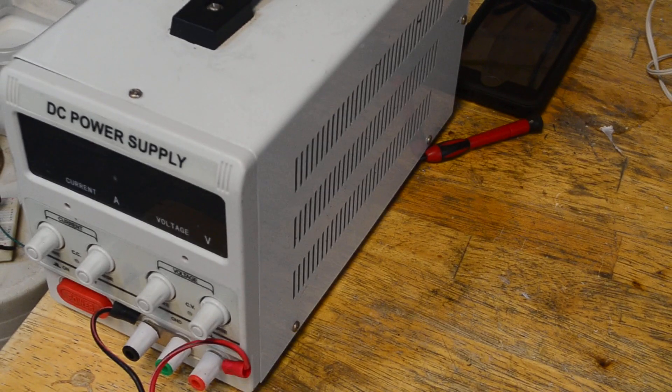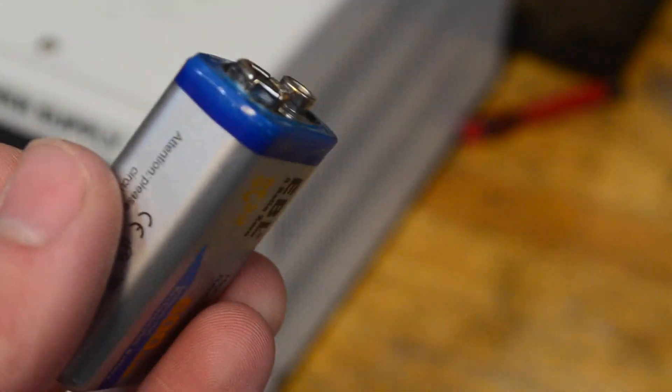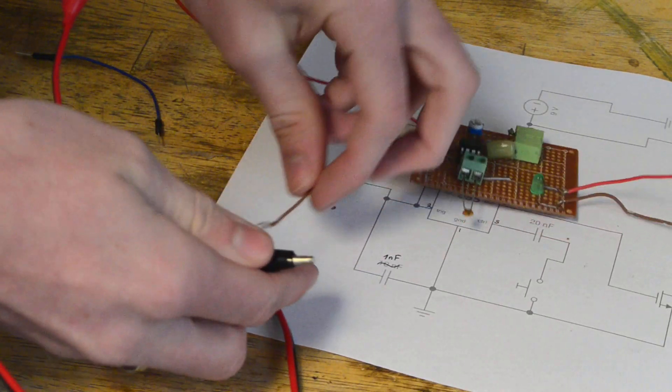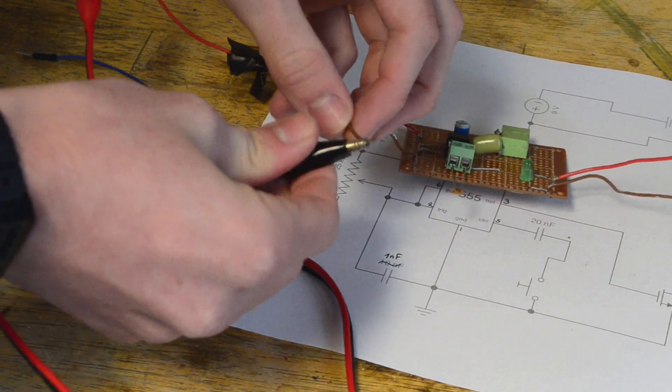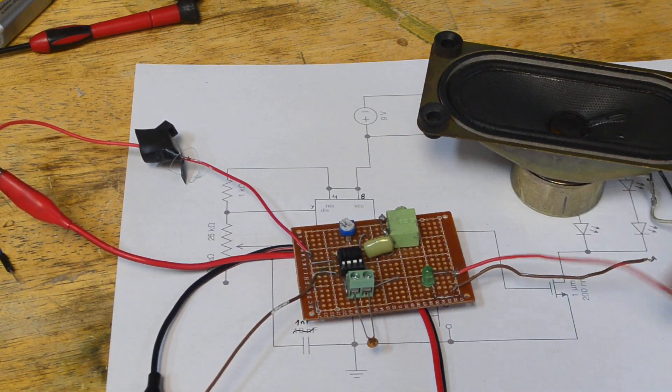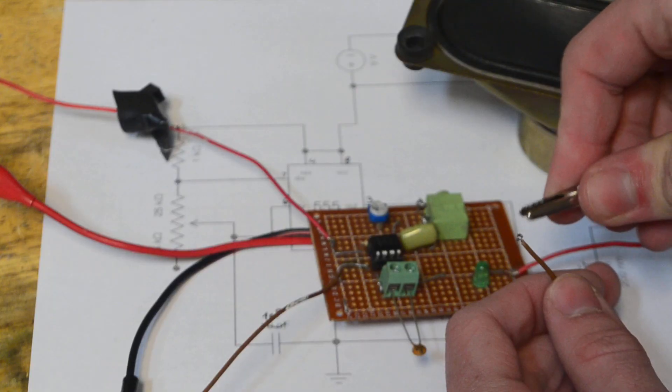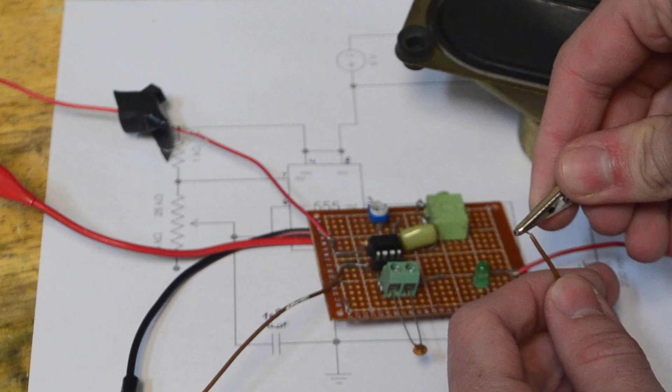To supply the power I'm going to be using my variable DC power supply. However, if you don't have one of these you can also just use a 9-volt battery. Now I'm going to connect up the power supply to the input of my frequency generator. Now the output of the frequency generator is going to be pin 3. So I have a wire going from that and I attached it up to this speaker here. And now the other end of the speaker I'm going to attach to this wire here. This wire is just going straight to the negative side of the power supply.